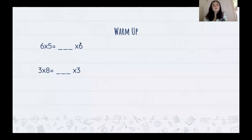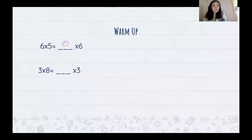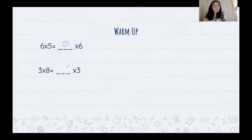So I have six times five is the same as — if we just switch the numbers around — it would be five times six. And then I have three times eight is equal to something times three. Again, we're just going to switch the numbers around and we're going to have eight times three. So that is how we use the commutative property of multiplication.